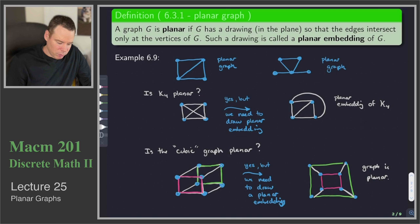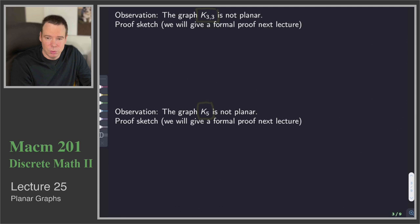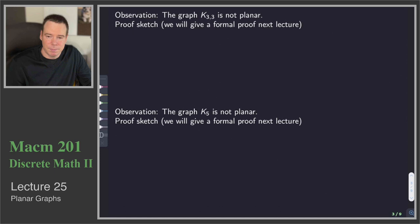We've got some examples of planar graphs, some that required us to redraw them in order to see they were planar. How about examples of non-planar graphs? The two basic examples of non-planar graphs are K33 and K5. We're not going to give a formal proof that these are not planar in this lecture — we will in the next lecture. For right now we're going to assume these are facts and build the rest of this lecture off of them.